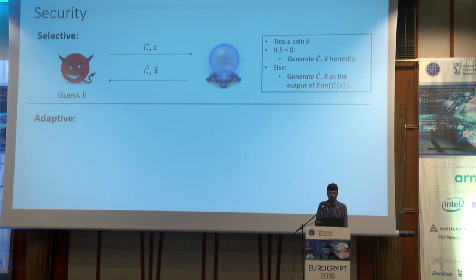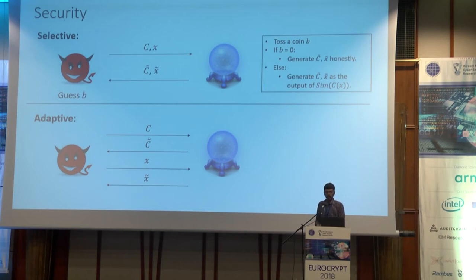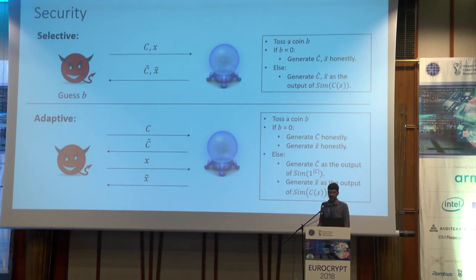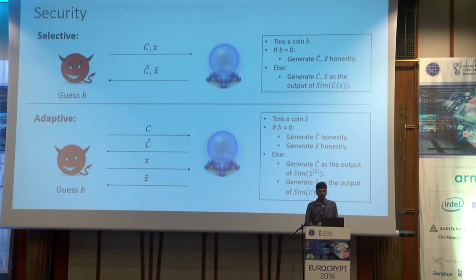In the stronger adaptive security notion, the adversary first commits to the Boolean circuit C and obtains the garbled circuit C-tilde in return. Later, depending on C-tilde, it may adaptively choose an input X and gets X-tilde in return. C-tilde and X-tilde are generated by tossing a random coin B. If zero, both are generated honestly. Otherwise, C-tilde is generated by a simulator given only the size of C, and X-tilde is generated by a simulator given C of X as input. The adversary's goal is to guess this bit B.